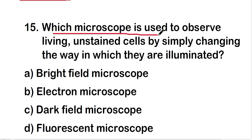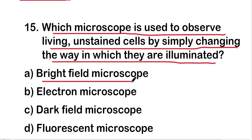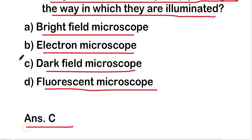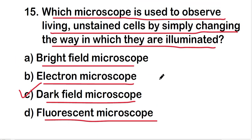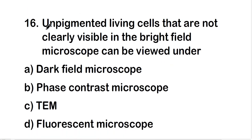Which microscope is used to observe living unstained cells by simply changing the way in which they are illuminated? The options are bright field microscope, electron microscope, dark field microscope, or frozen microscope. The right answer is option C — dark field microscope is used to observe living unstained cells by changing the way they are illuminated.